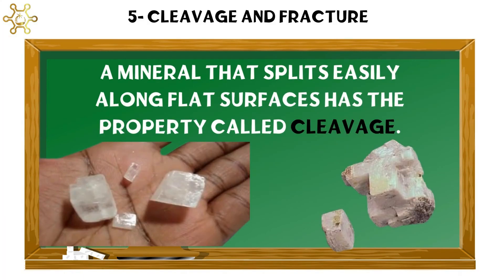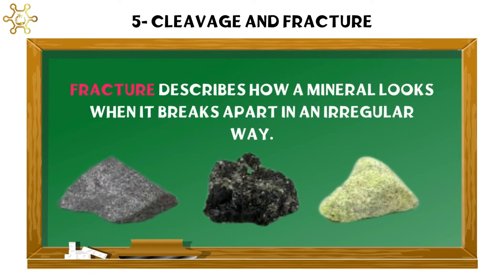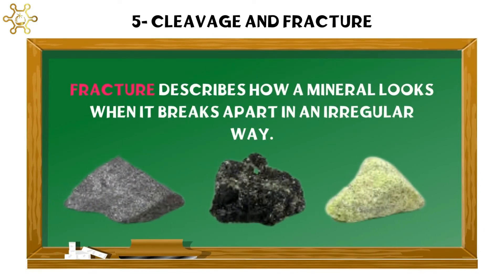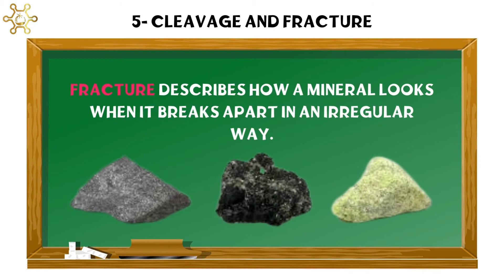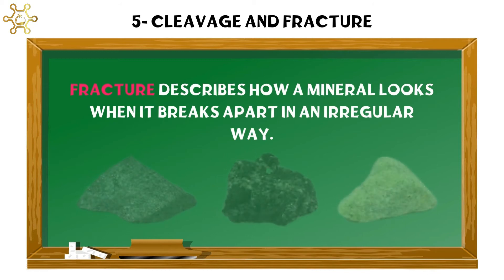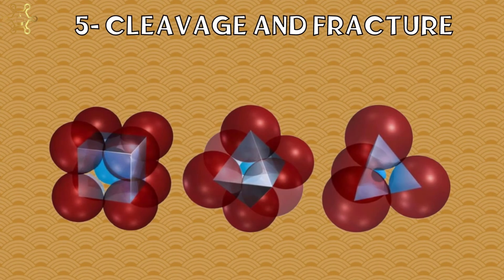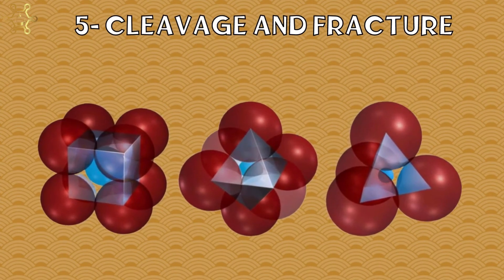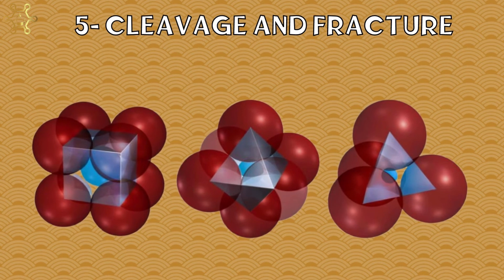Number 5: Cleavage and Fracture. A mineral that splits easily along flat surfaces has the property called cleavage. Fracture describes how a mineral looks when it breaks apart in an irregular way. Cleavage and fracture depend on how the atoms in its crystals are arranged.